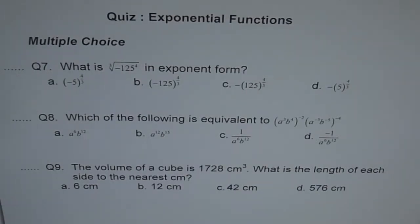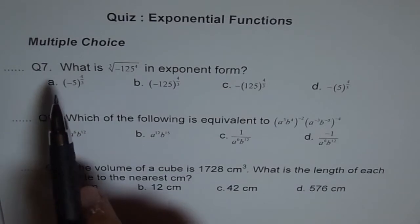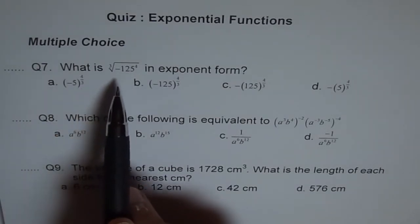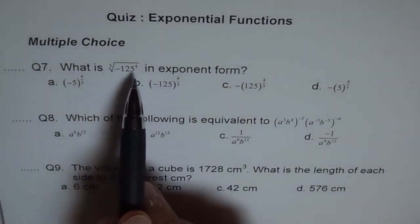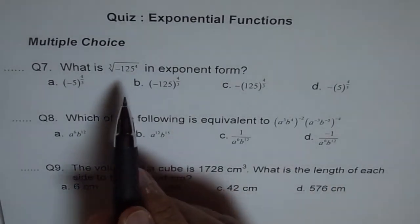Here are three more multiple choice questions on the quiz of exponential functions. Now question number 7 says, what is cube root of minus 125 to the power of 4 in exponent form? So how will you write this?